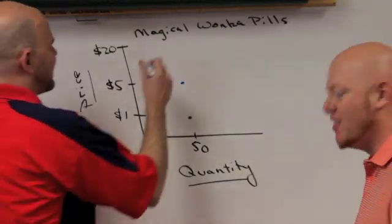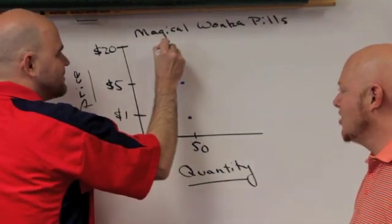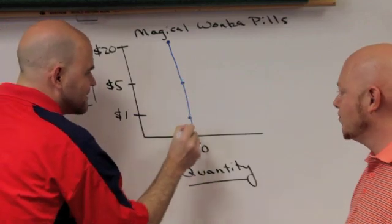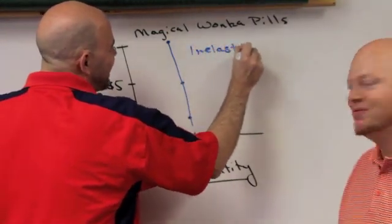So as you see price went up and this product was a necessity. We have a demand curve. If I can draw a straight line straight up and down. This is your inelastic demand curve.